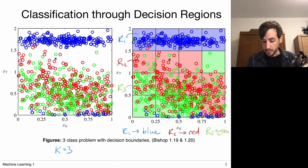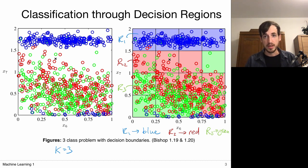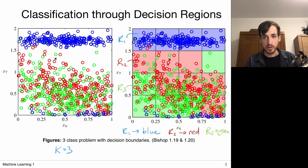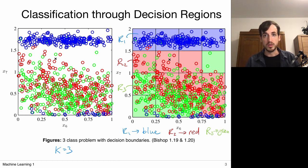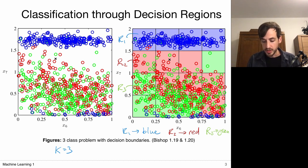In such an approach, I can divide my entire domain into regions. When I observe a new data point — for example, this point indicated with a cross — it lies in region R2, so I say it belongs to the red class. The boundaries between these regions are called decision boundaries.